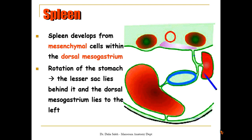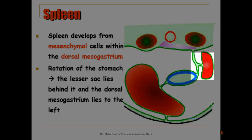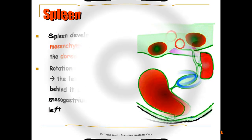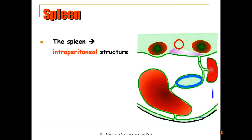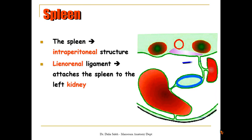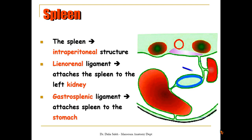With the rotation of the stomach, the lesser sac develops and lies behind the stomach, and the dorsal mesogastrium containing the spleen now lies on the left side. With further development, the spleen becomes an intraperitoneal structure, completely surrounded by peritoneum and connected to the posterior abdominal wall by the lienorenal ligament, which connects the spleen to the surface of the kidney, and by the gastrosplenic ligament, which connects the spleen to the stomach.